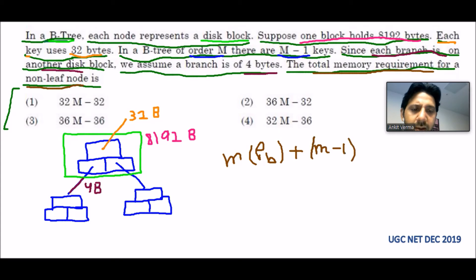PB is the block pointer, plus M minus 1 in brackets, key plus PR. PR is the record pointer. PB, the block pointer, points to the block. Pointer who is pointing to the record is the PR. Let's suppose we have a record inside it, then it will be pointing. It is PR.